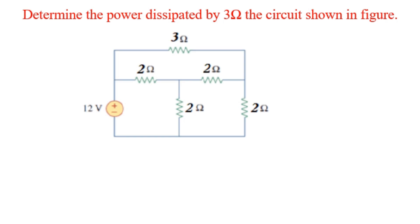Determine the power dissipated by the 3 ohm resistor in the circuit shown. To find the solution, you can follow mesh analysis, nodal analysis, or star-to-delta transformation. We will solve the problem using nodal analysis.